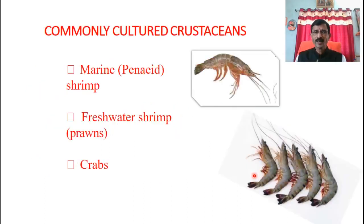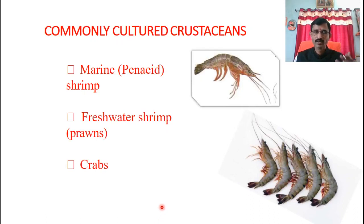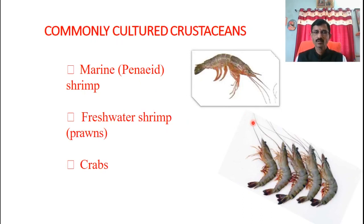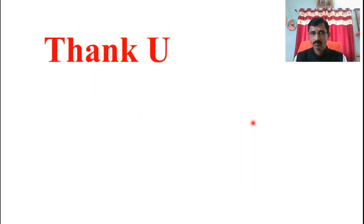In some ponds and lakes, people culture fresh water prawns. Some areas near sea water can culture prawns. Penaeus indicus and Penaeus monodon are one type of prawn. All are cultured in ponds and lakes for the purpose of economic benefit.